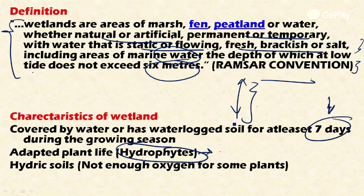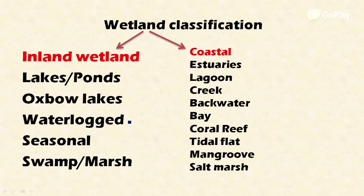The soils are hydric soils, which do not have enough oxygen to support certain kinds of plants. Only very distinct kinds of plants — called hydrophytes — can live in these wetlands. These features — hydrophytes and hydric soil — are the defining characteristics of wetlands.